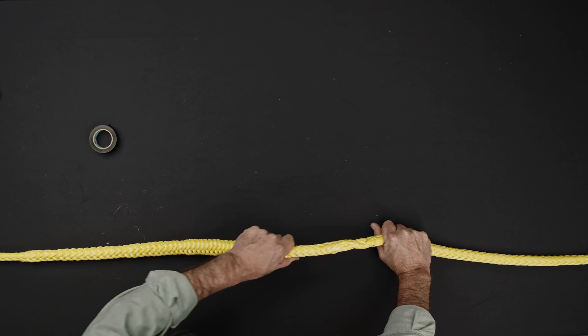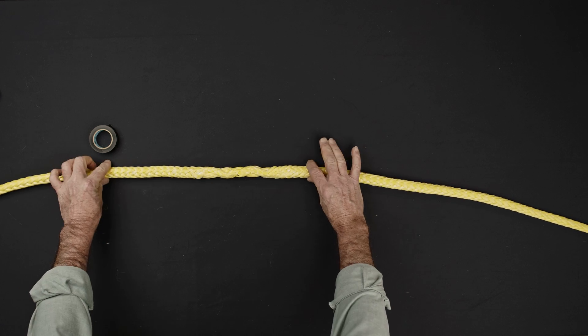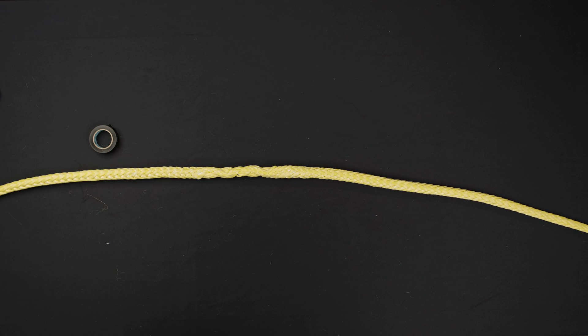Once the splice is complete, perform two whip locks located 4 inches apart on either side of the center of the splice. Refer to the whip lock instructions at the end of the industrial single braid eye splice video.